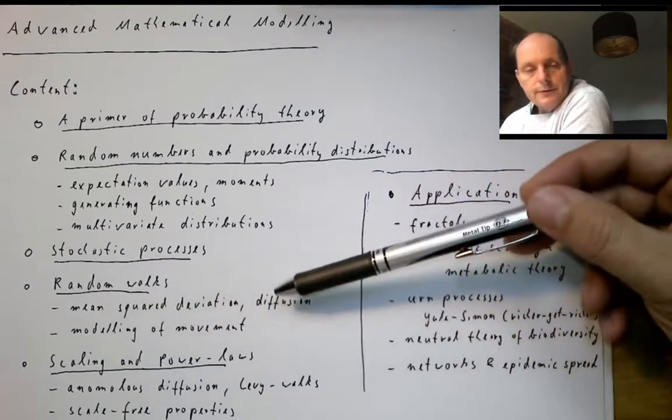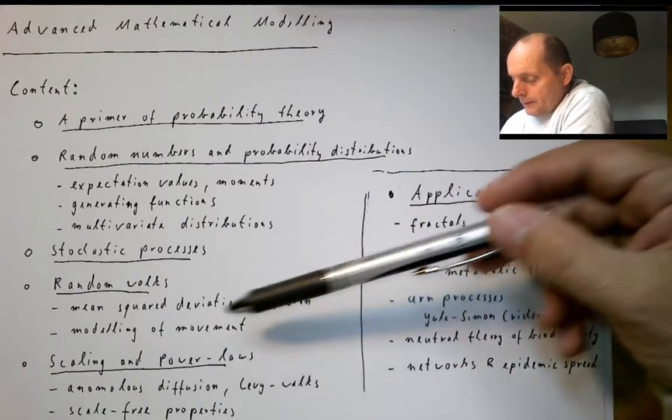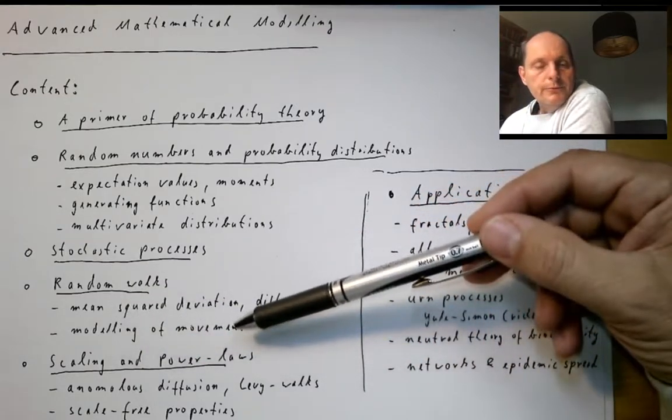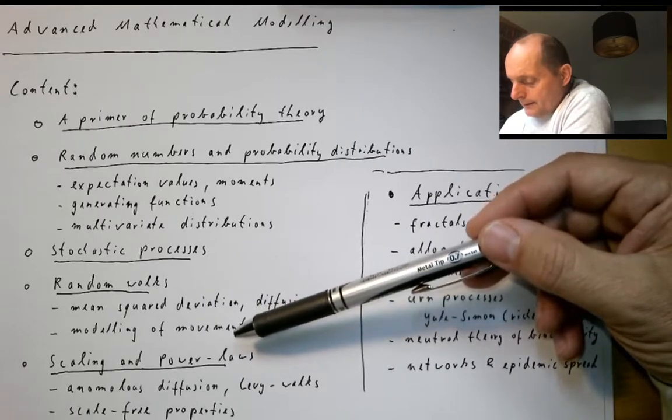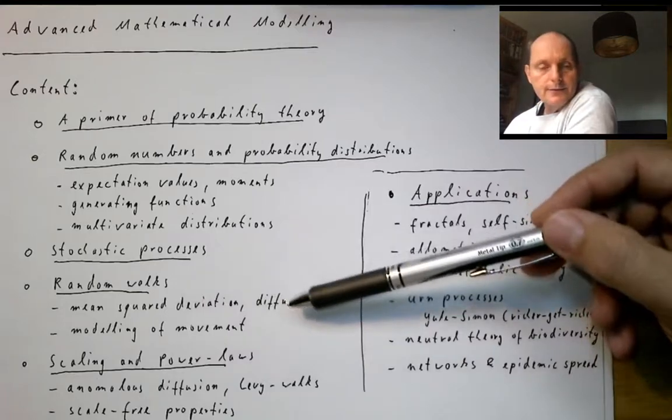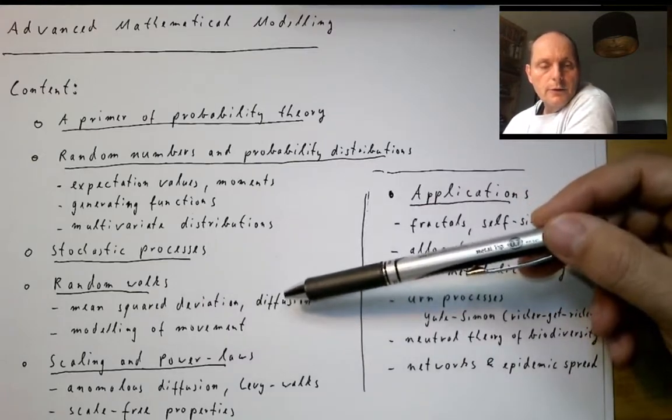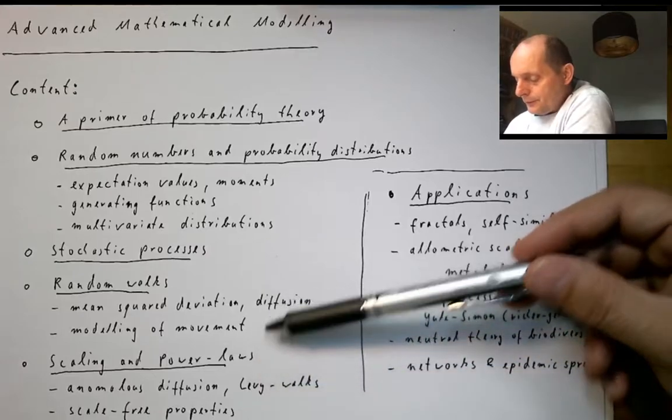We will look at terms like mean squared deviation and diffusion, and then we will see the first power law. We will also use this a little bit to model animal movement. Once we have seen that random walks easily describe diffusion, we will look at how we can extend this to get behavior that is beyond diffusion.